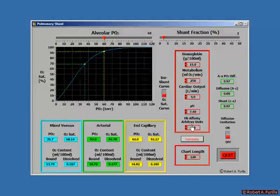I can change pH and hemoglobin affinity. I can also increase the chart length to see PO2s higher than 120 millimeters of mercury. I've just reinitialized to put everything back to normal.